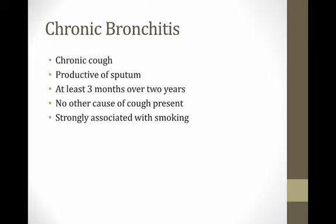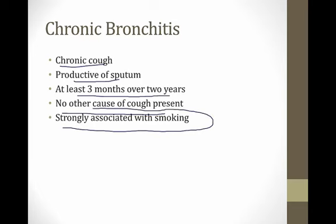First we'll talk about chronic bronchitis. This condition has a completely clinical definition — an arbitrary clinical definition decided on years ago, but it's been used in clinical trials and has always stuck. To say that someone has chronic bronchitis, they have to have a chronic cough productive of sputum for at least three months over two years with no other cause of cough present. Chronic bronchitis, like other forms of obstructive lung disease, is strongly associated with smoking.